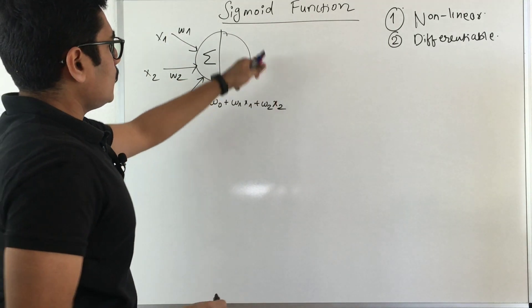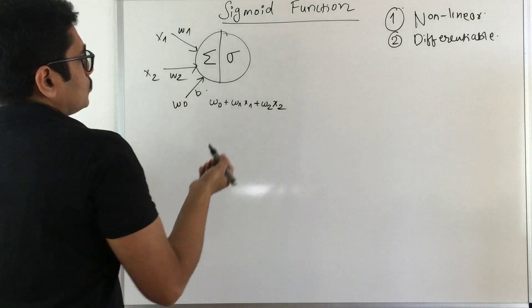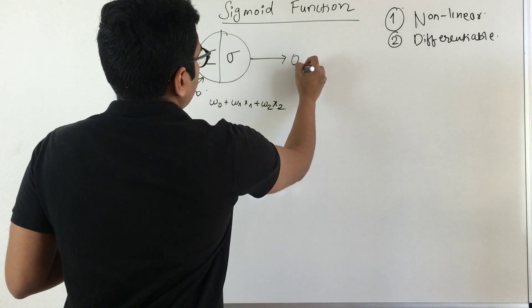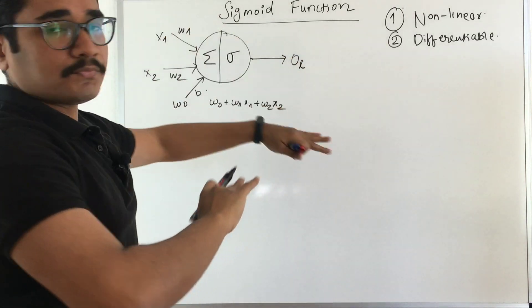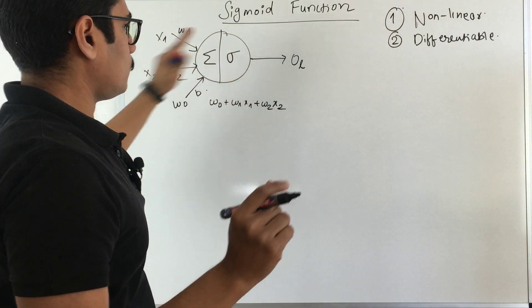This is the linear part, and whatever you have here is your sigmoid function. Then you get the output—we call it ol, the output from all these layers. Now we're just focusing on one particular unit or neuron.